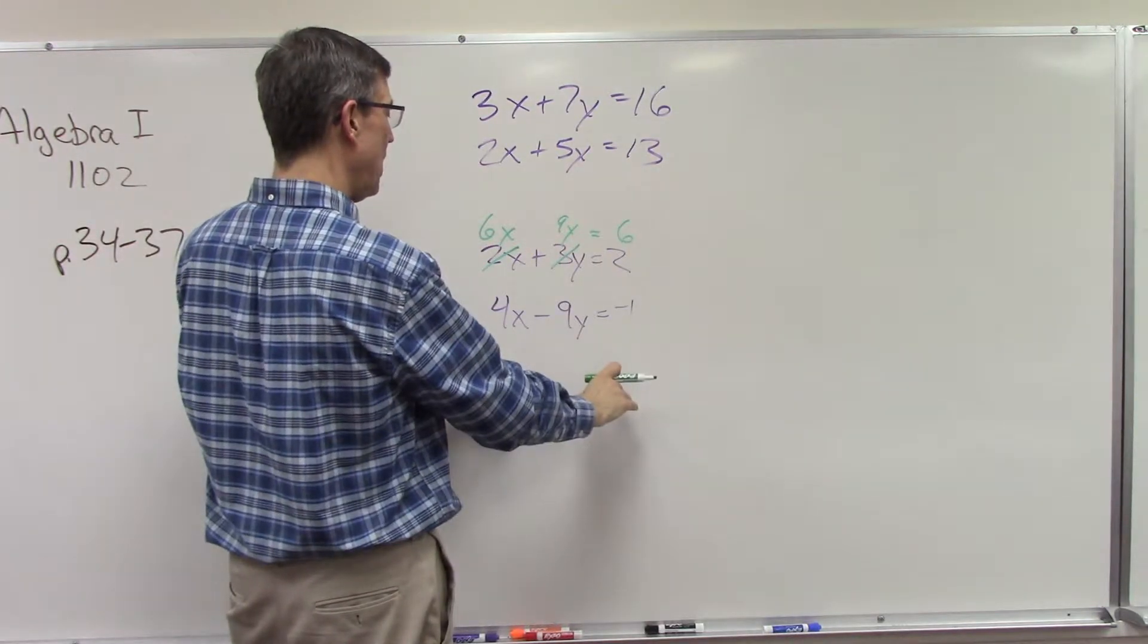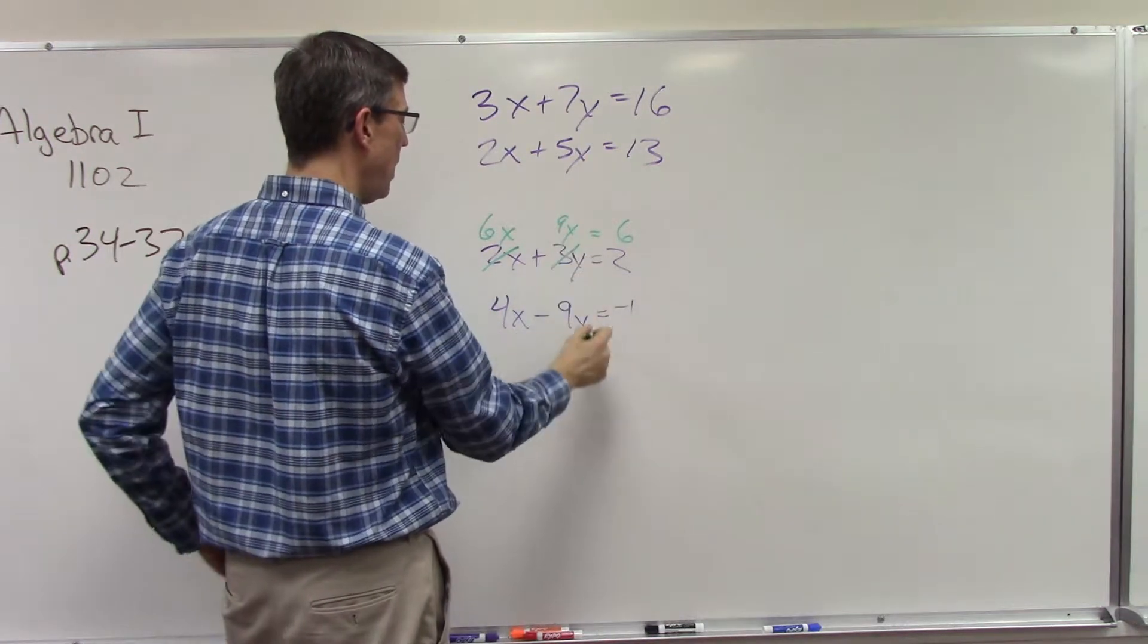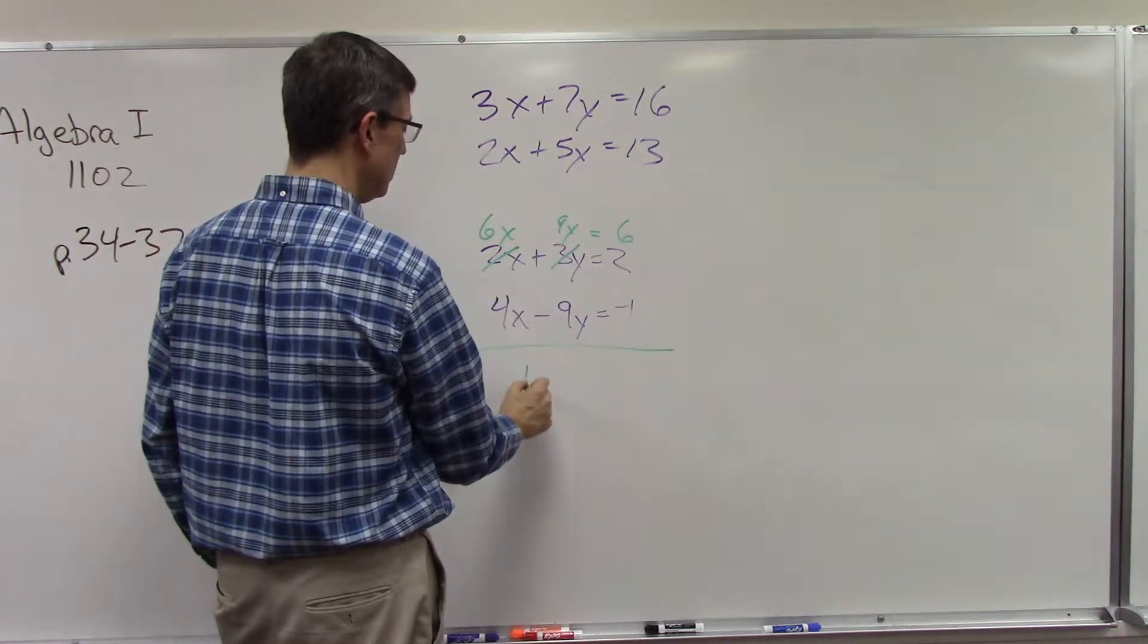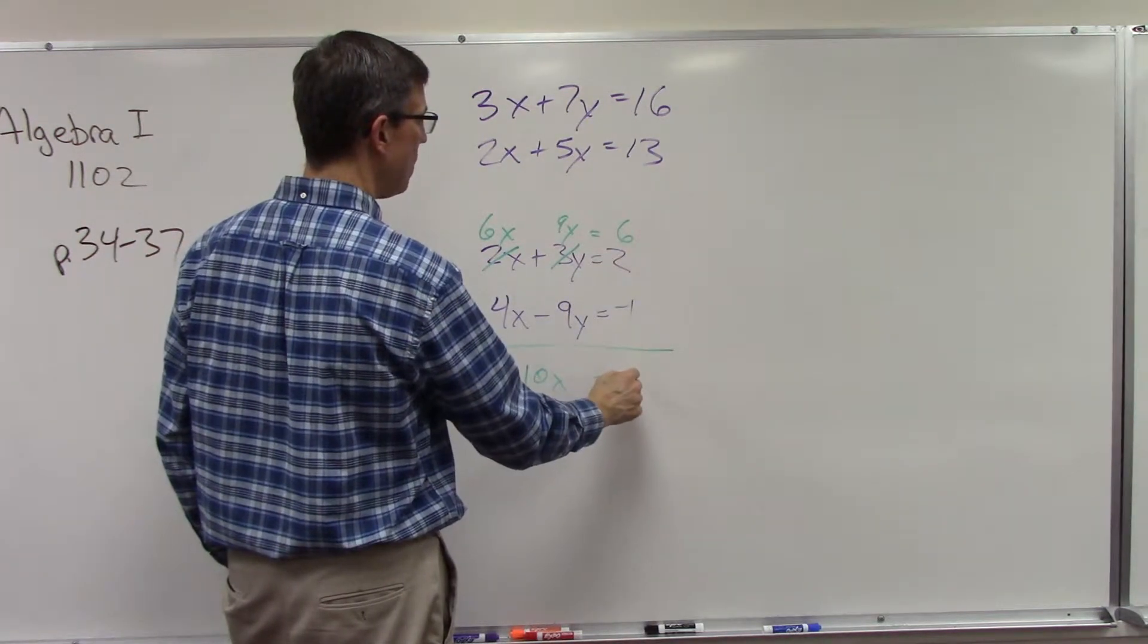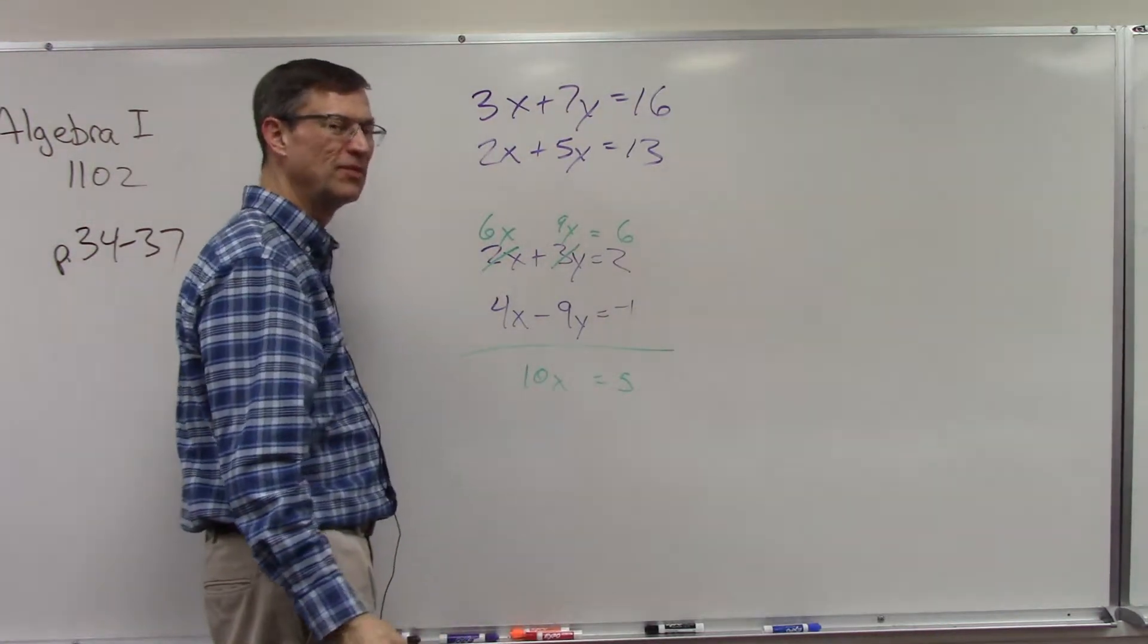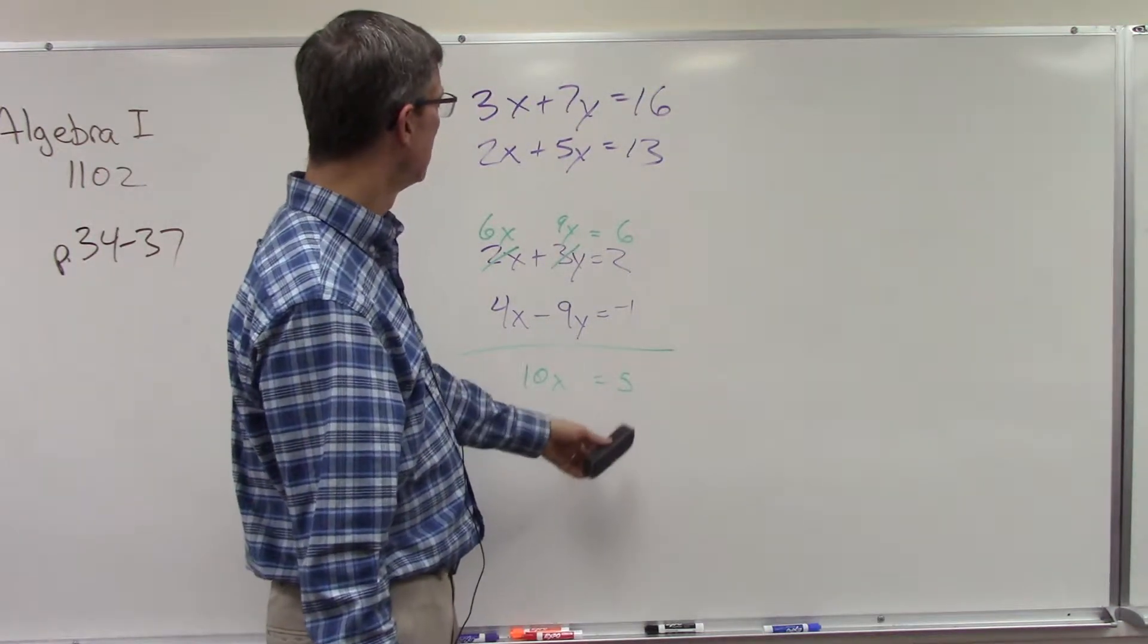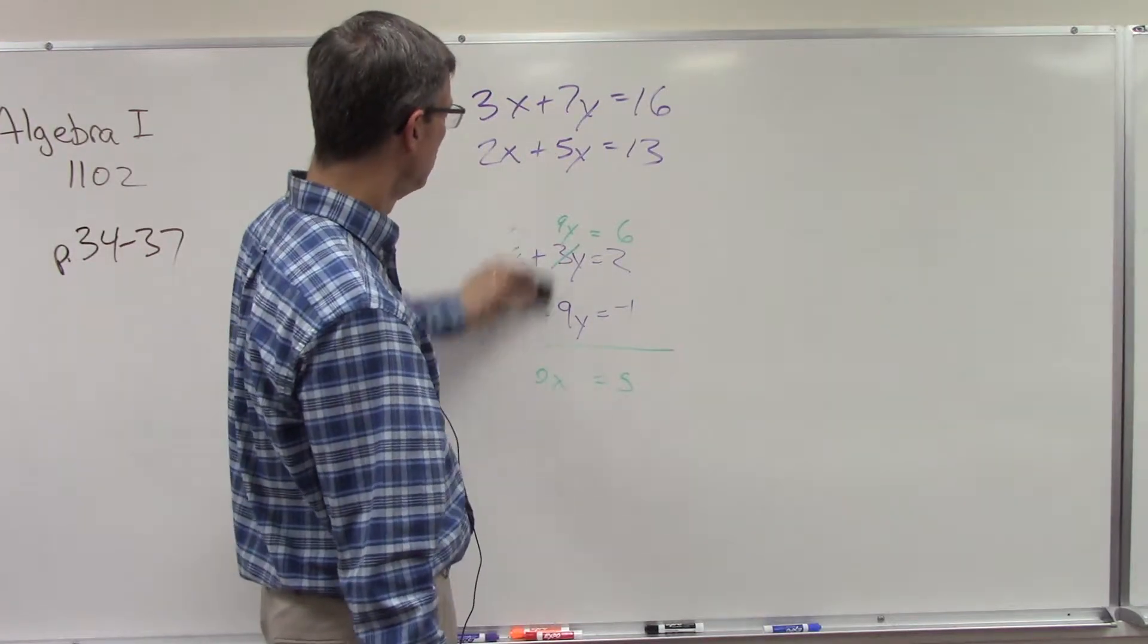Now add straight down and the y's cancel out - positive 9y, negative 9y, gone. So you have 10x equals 5. It looks like we're gonna have a fraction. So you get a fraction for x, and then you can plug that into either equation and solve for y. So you'll probably get fractions for both the x and the y on that one.